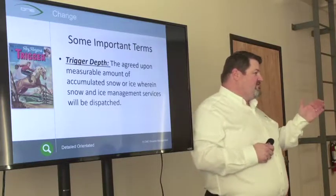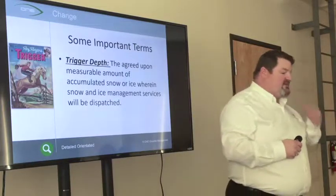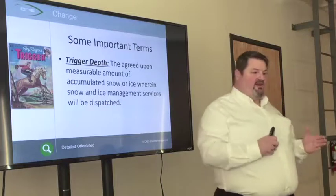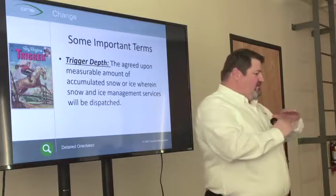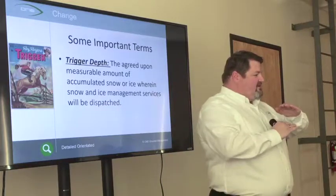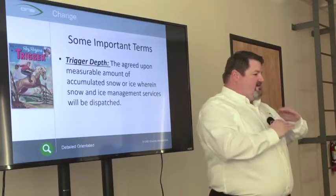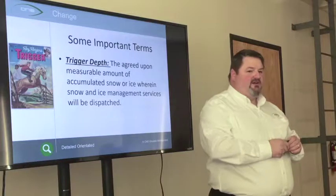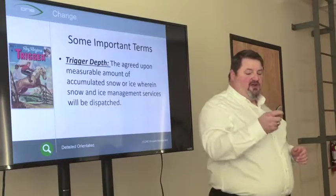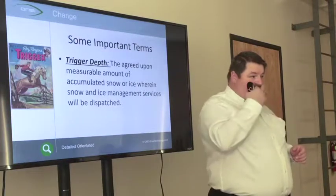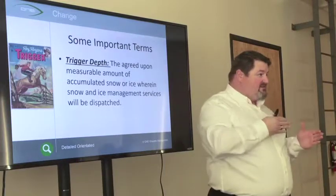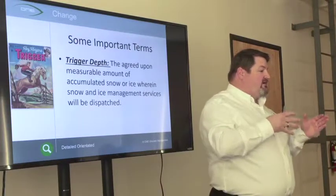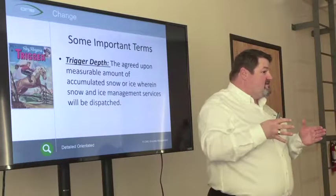Trigger Depth is the point at which you and your client have determined you're going to clear snow and ice from a surface — the accumulated amount at which you say it's time to start plowing. There are different depths: we have clients with a one-inch trigger and clients with a two-inch trigger.